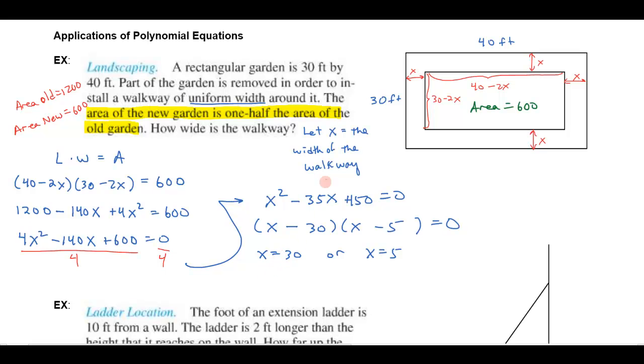Now we gotta go back and think, x was the width, if I had a width of 30 that I was cutting off, and I only had 30 to start with, I wouldn't have any garden left, would I? So this x equals 30, that one doesn't make sense in terms of this problem. It solves this algebraic problem, because if I plug 30 in up here, I'm gonna get two negative numbers that would multiply and give me 600, but it doesn't make sense for this application problem. So I just throw that one out.